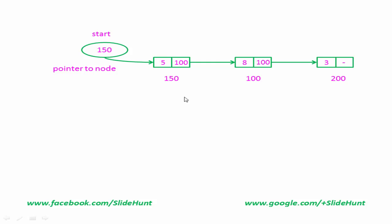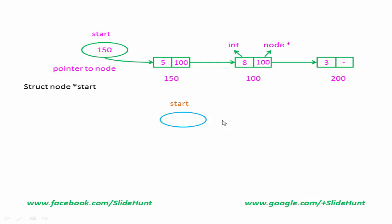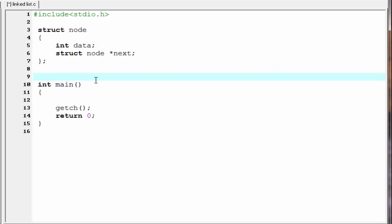Each node has two fields. The type of the first field is integer, and the second field is pointer to node, or 'node star'. So we declare the start variable as 'struct node star start'. Initially, when the list is empty — meaning there is no node in the list — the pointer start should point to nothing, so we initialize it as NULL. Now let's go back to the coding, and here I am going to initialize the start pointer to NULL: 'struct node star start = NULL'.